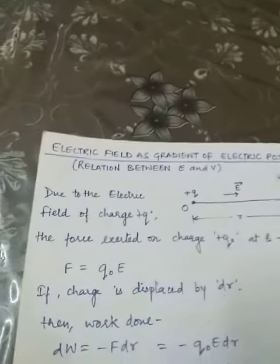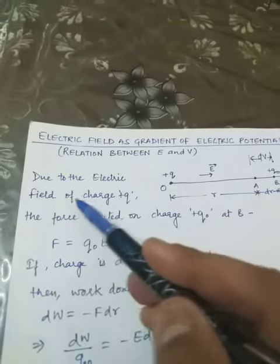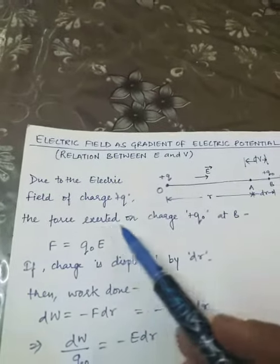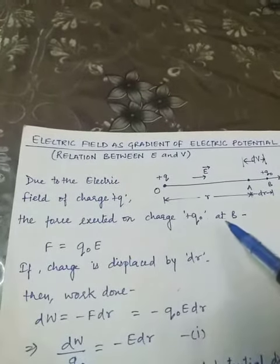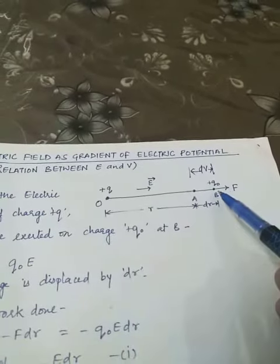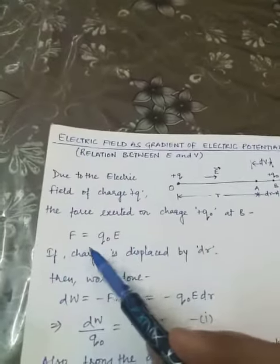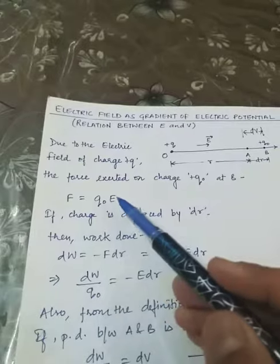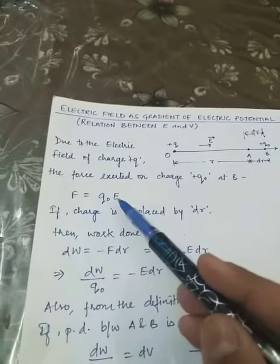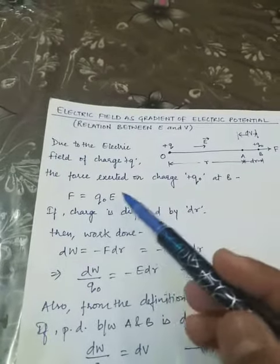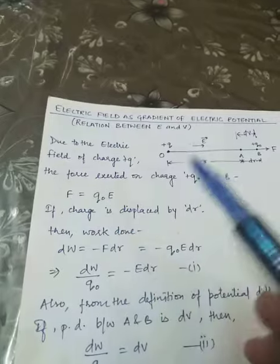Due to the electric field of charge plus Q, the force exerted on charge plus Q0 at B will be F equals Q0 times E. E is the electric field at B and Q0 is the charge, so force is Q0 times E.